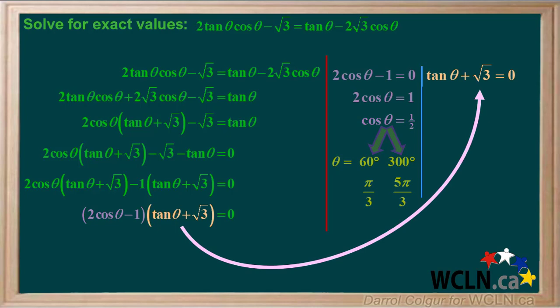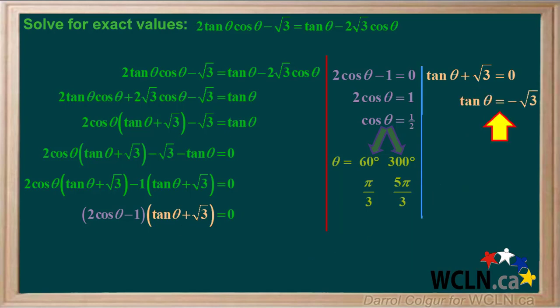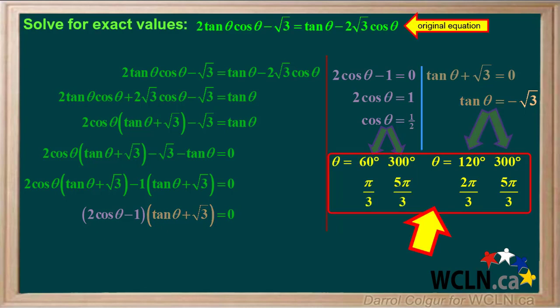Now we'll equate the second factor, tan theta plus root 3, to 0 and simplify the equation. Subtracting root 3 from both sides gives us tan theta equals negative root 3. Tan theta is negative root 3 for angles 120 degrees, which is 2 pi over 3 radians, and 300 degrees, which is 5 pi over 3 radians.